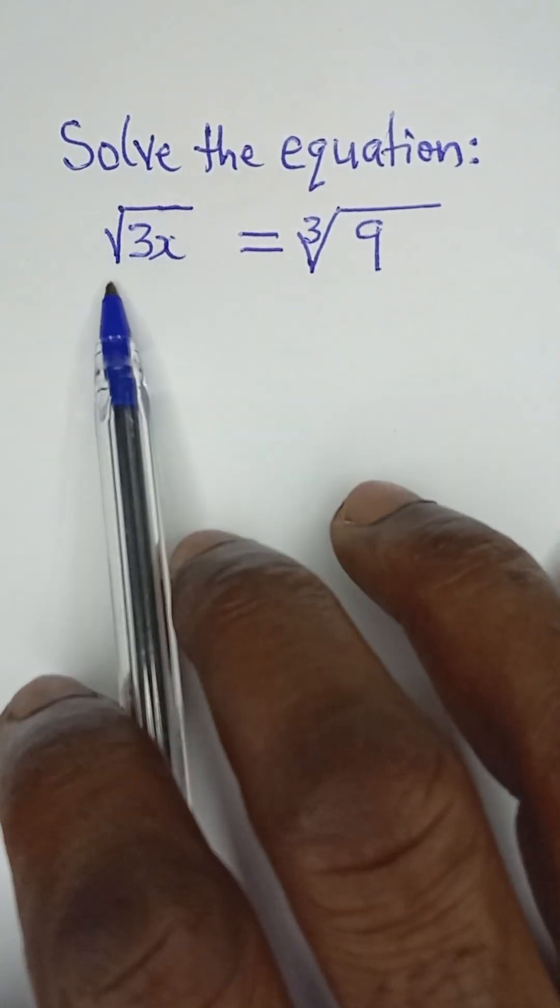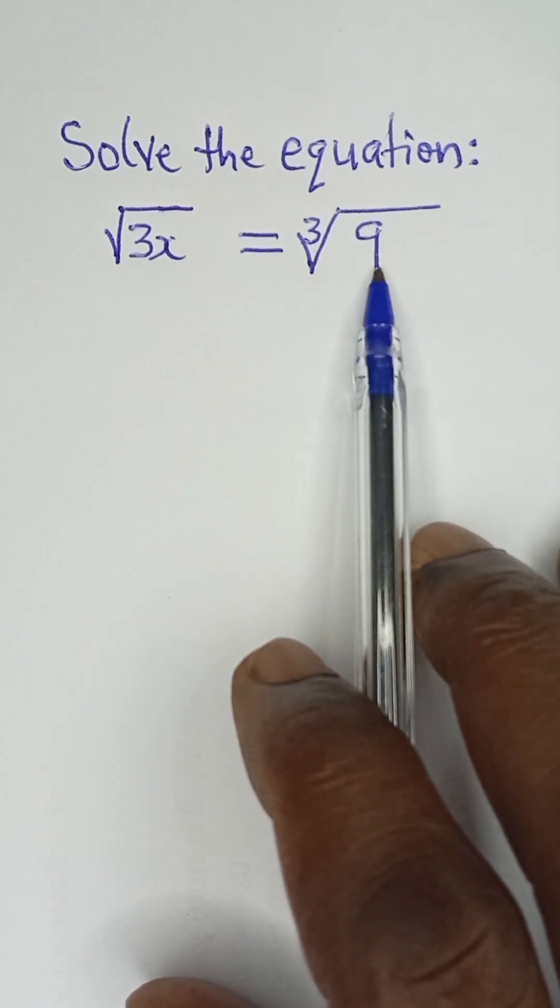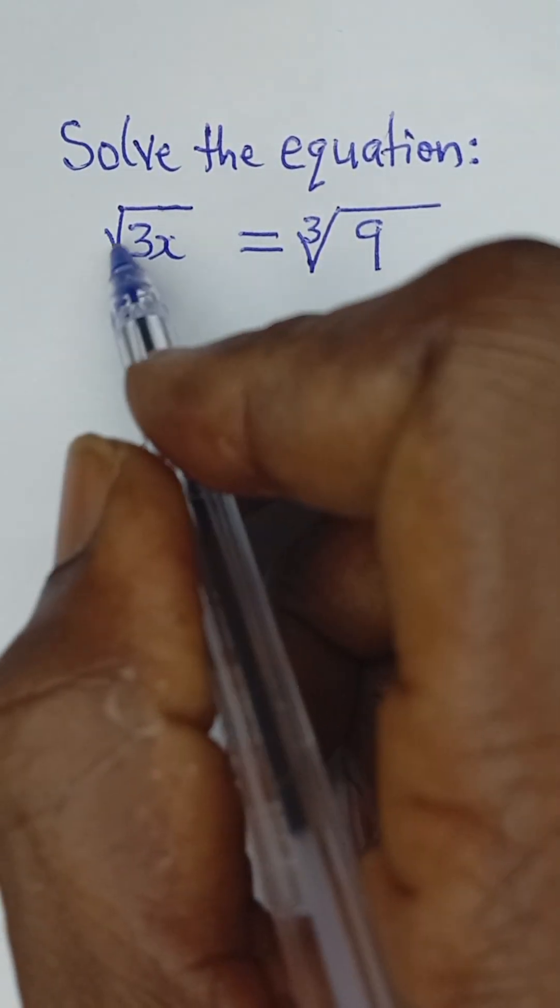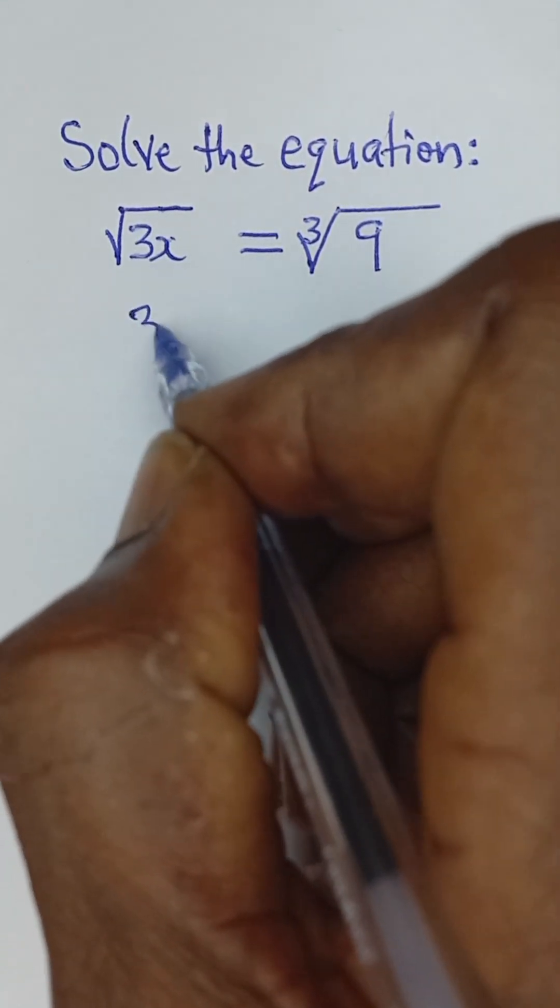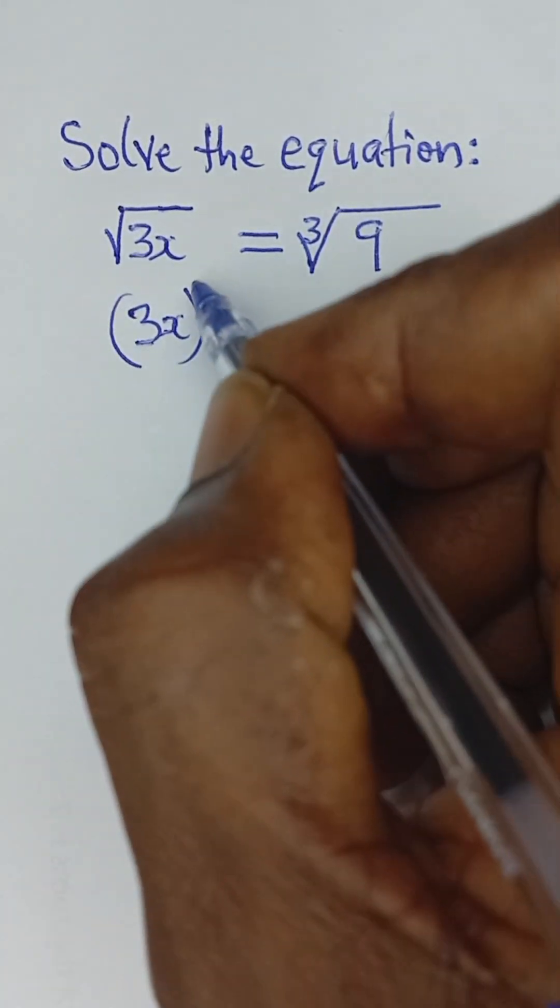Solve the equation: the square root of 3x is equal to the cube root of 9. Now, this square root of 3x can be represented as 3x raised to the power of 1/2.